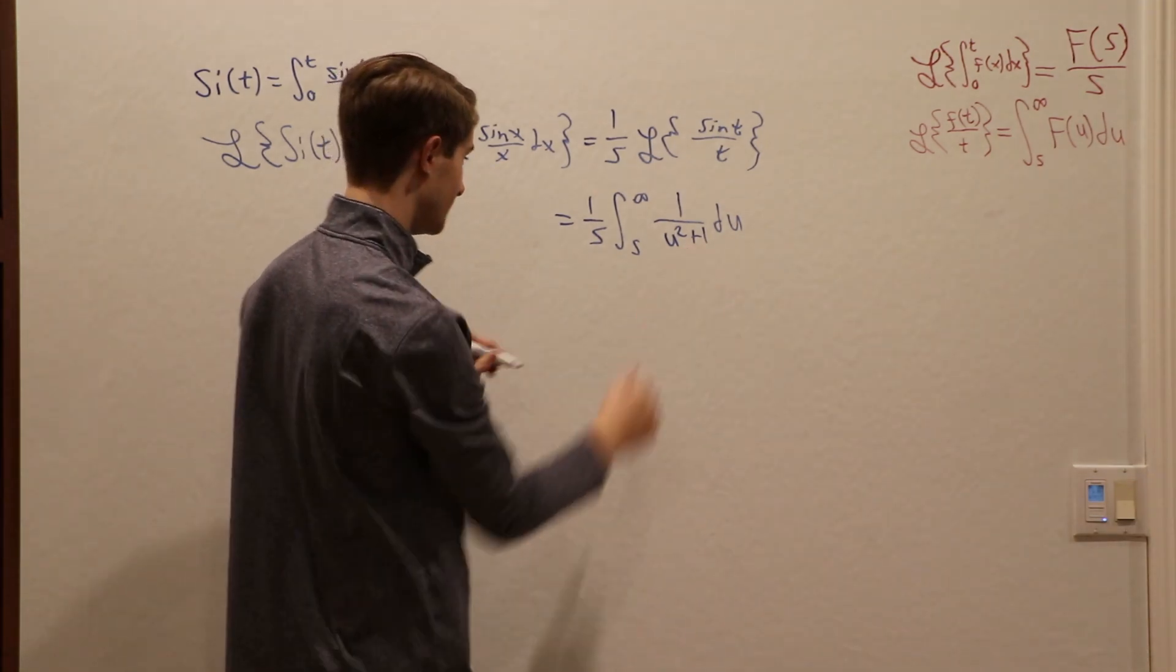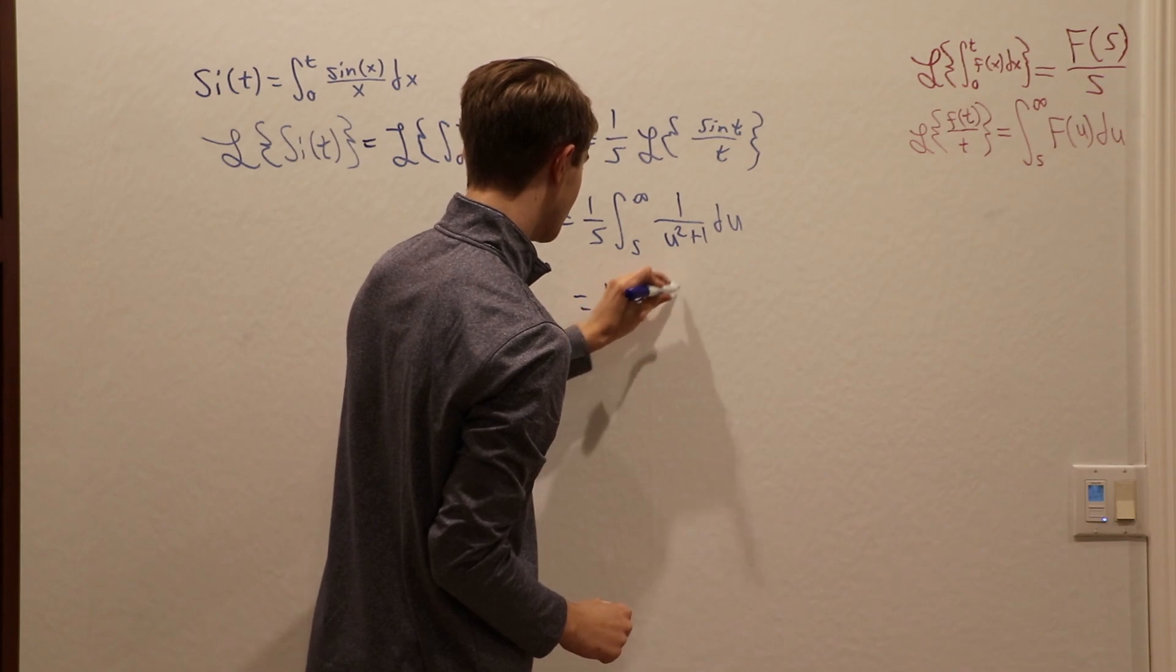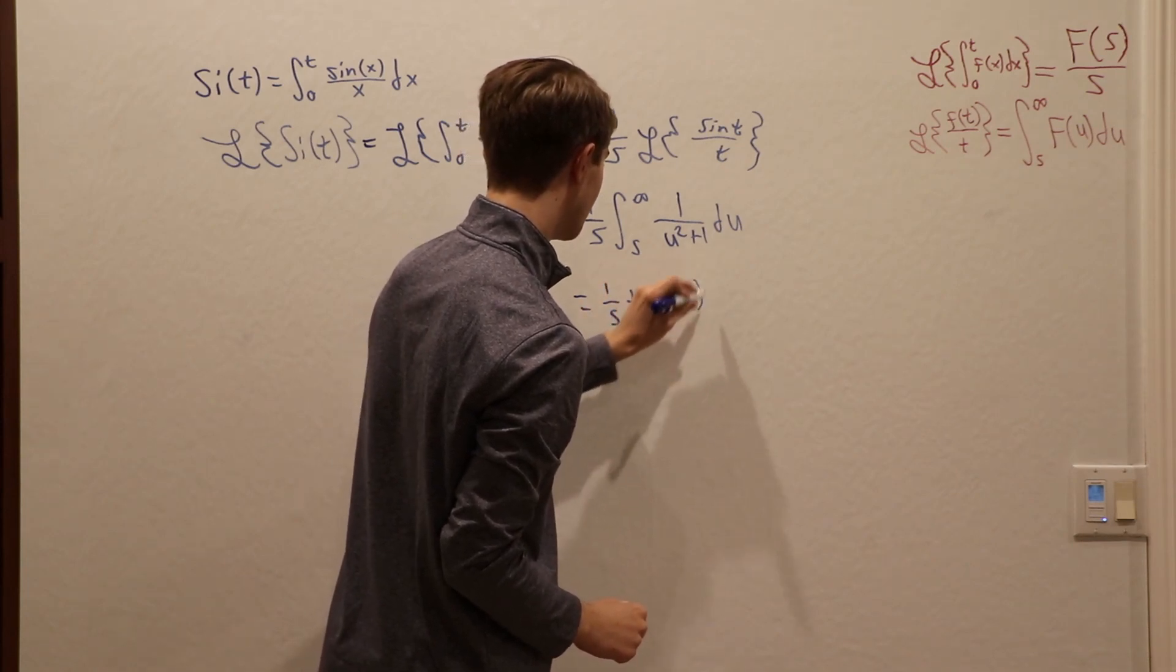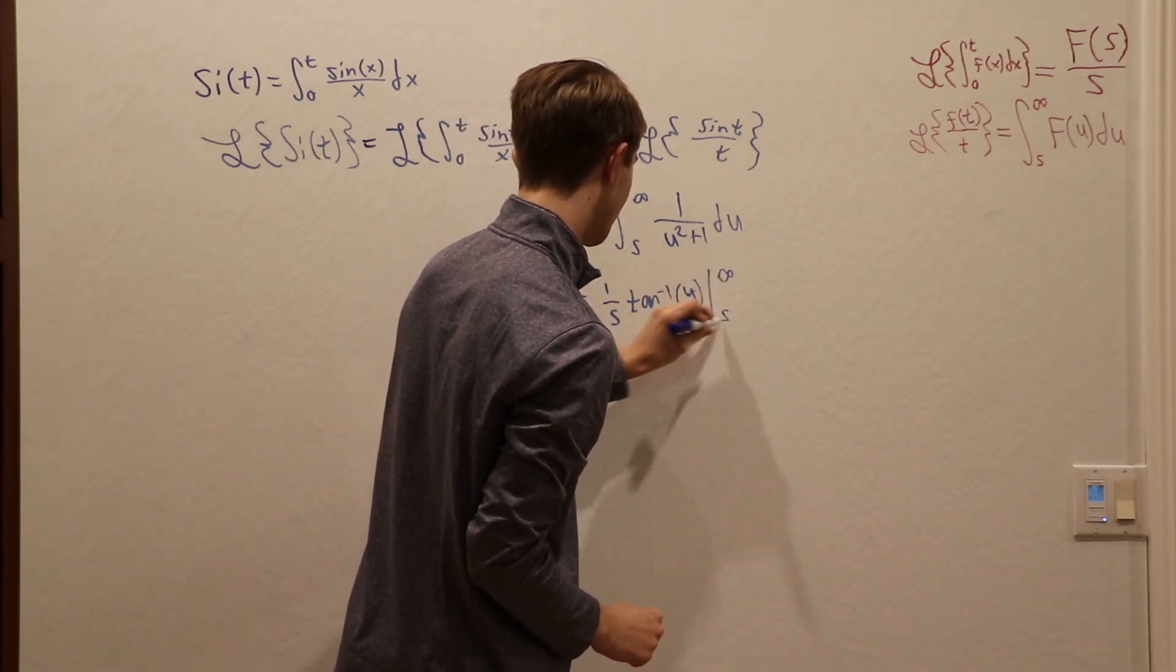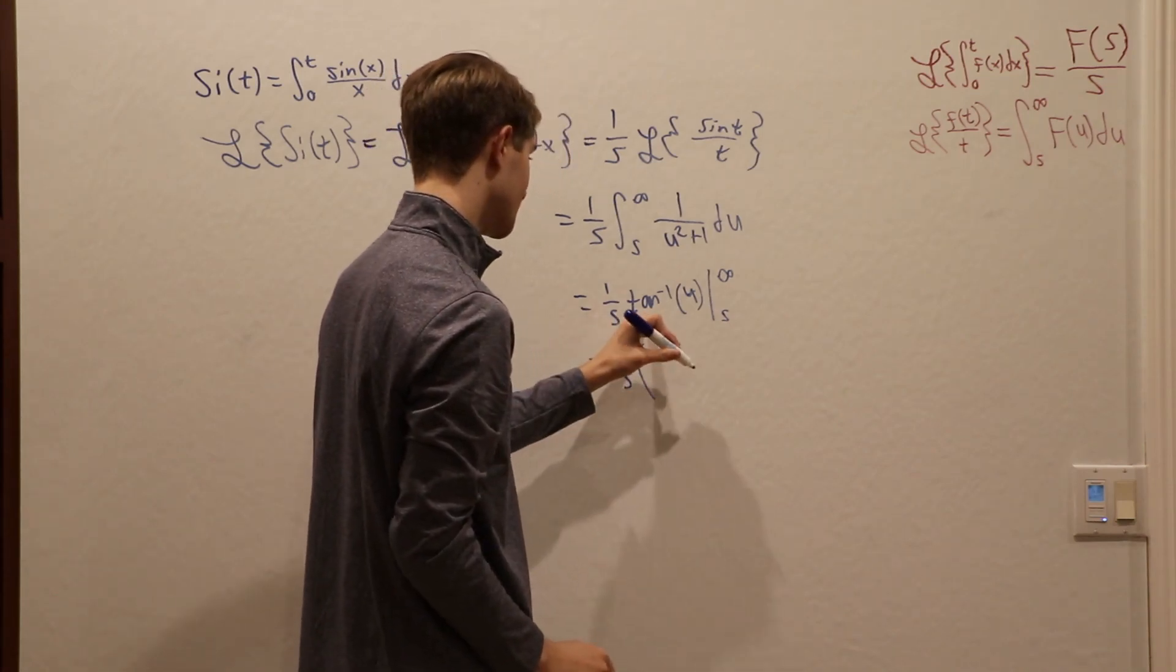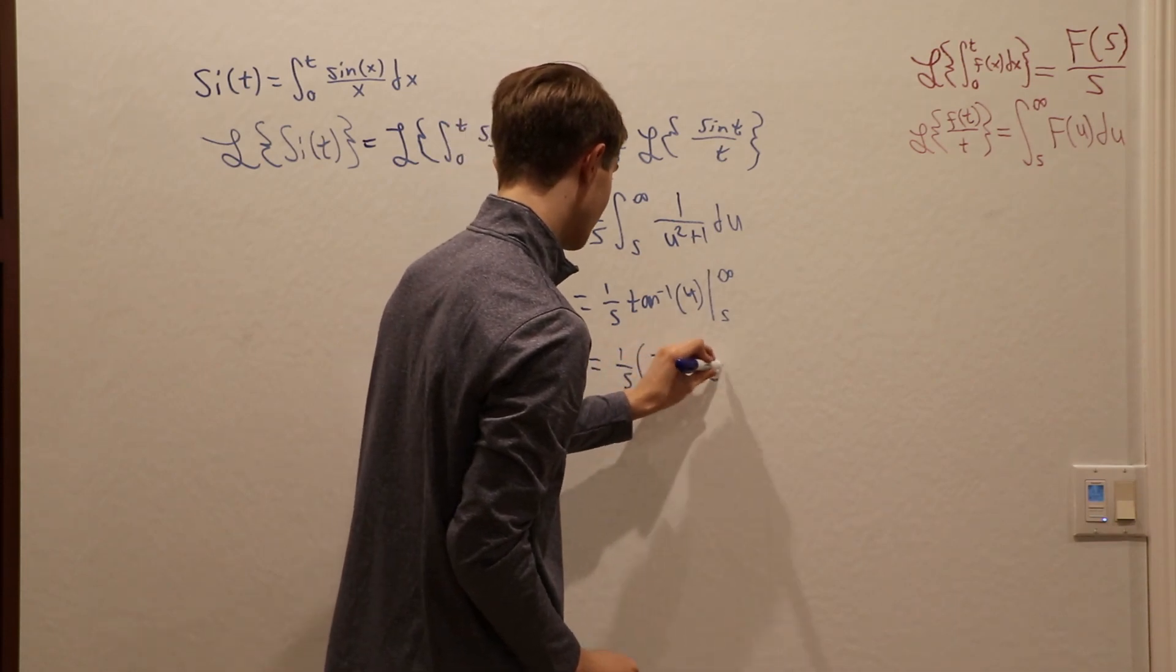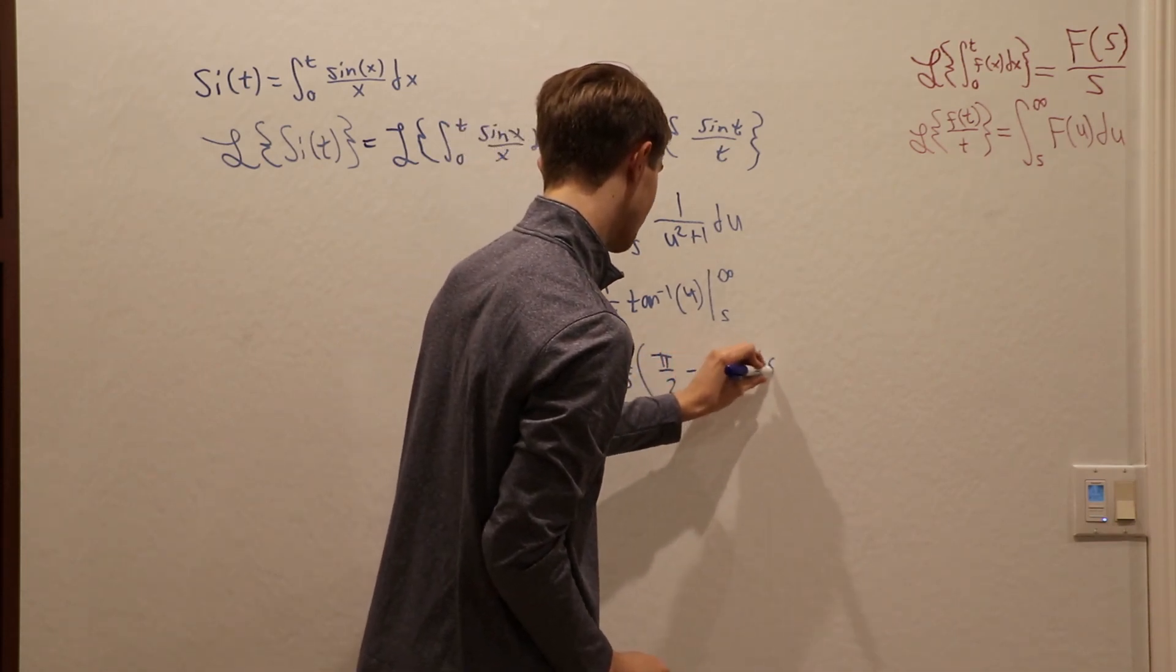From here, we know that this integral equals the tangent inverse of u evaluated at infinity and s. That gives us the tangent inverse of infinity, which is pi over 2, minus the tangent inverse of s.